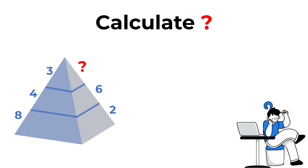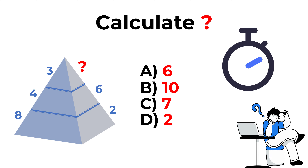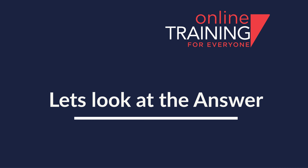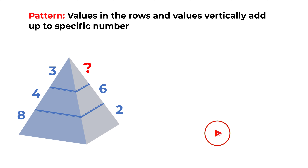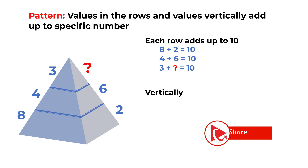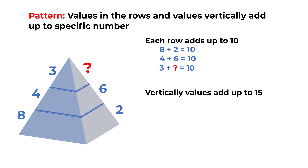Do you see the answer? Give yourself a little bit of time. For some of you this type of question might be easy, but for some it might require some thinking. Ready or not, let's get to the correct solution together. The key to solve these types of challenges is to always look for patterns. Each row adds up to 10 and vertically values also add up to 15, so the correct answer is choice C, 7.